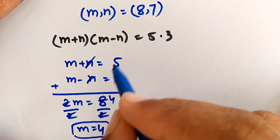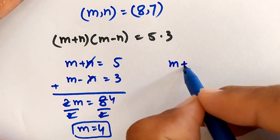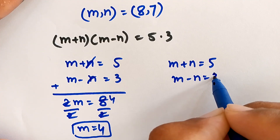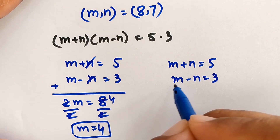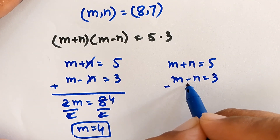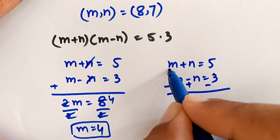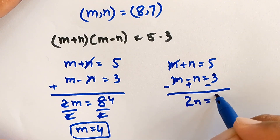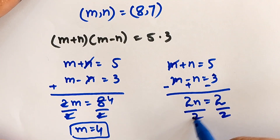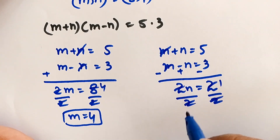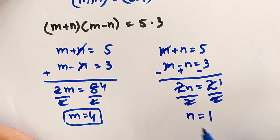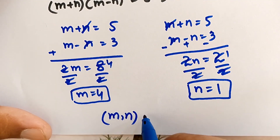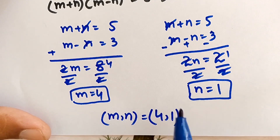To find n in Case 2, we subtract the equations. The m terms cancel, giving 2n equals 5 minus 3, which is 2. Dividing both sides by 2, n is equal to 1. So from Case 2, m equals 4 and n equals 1.